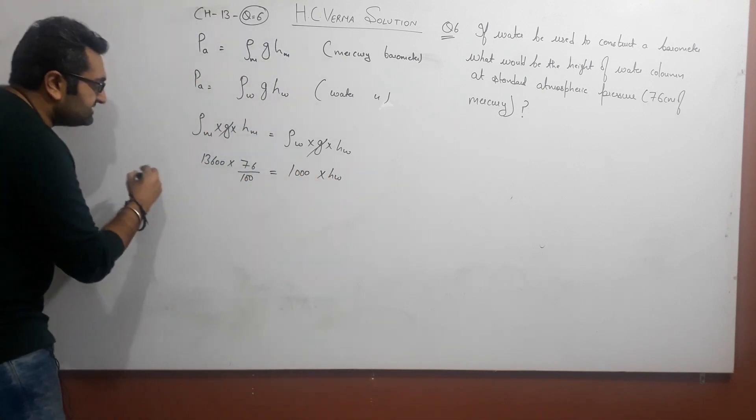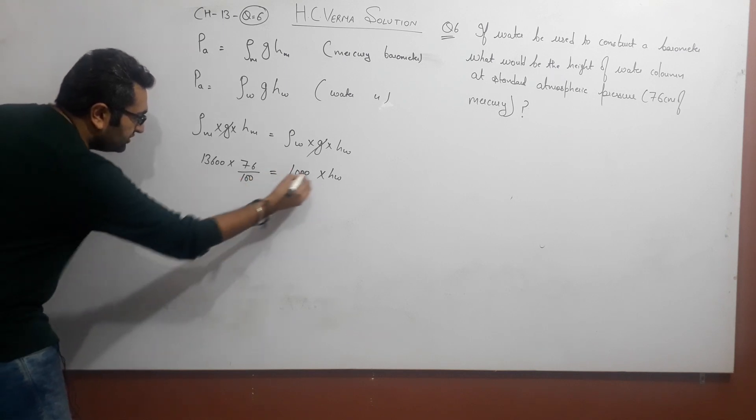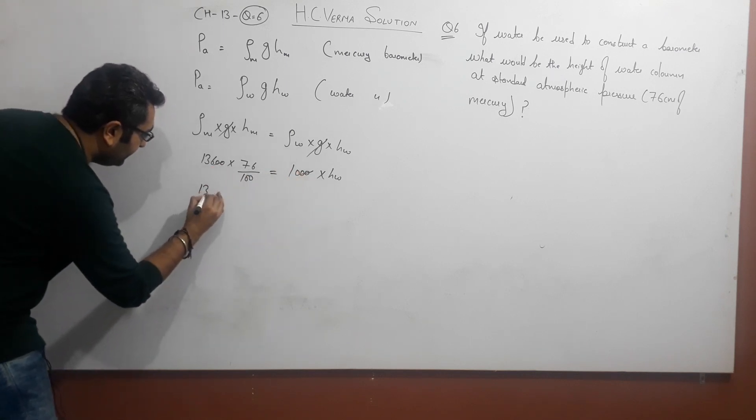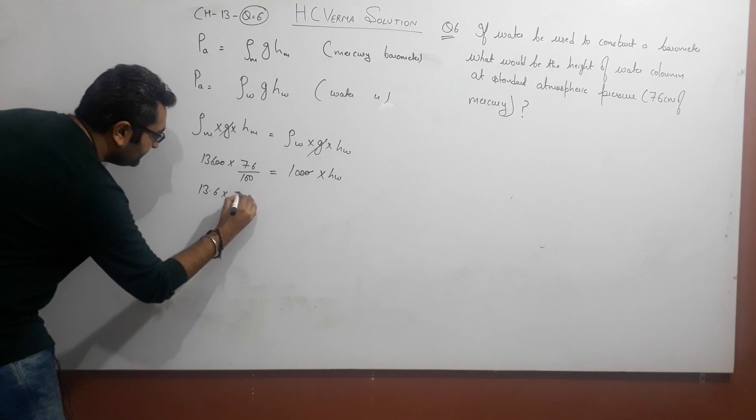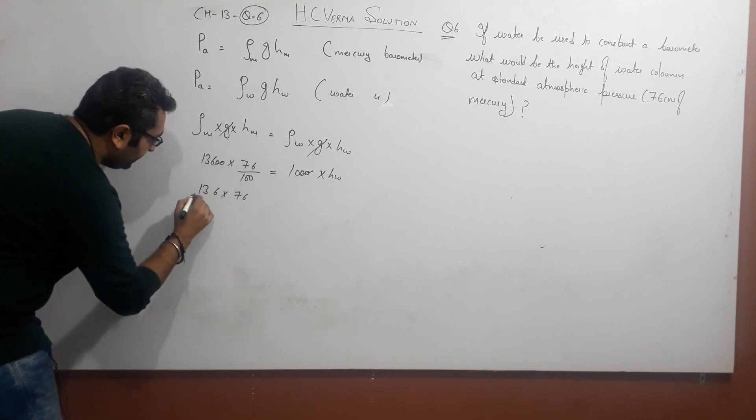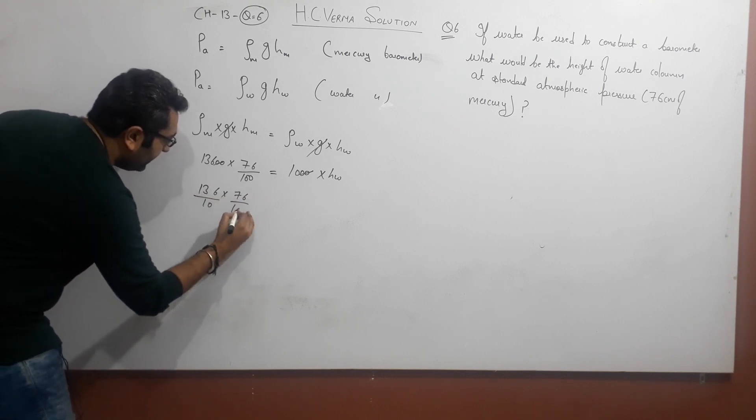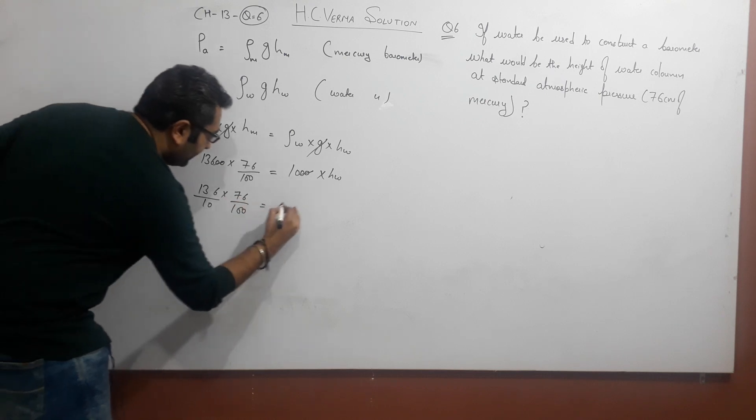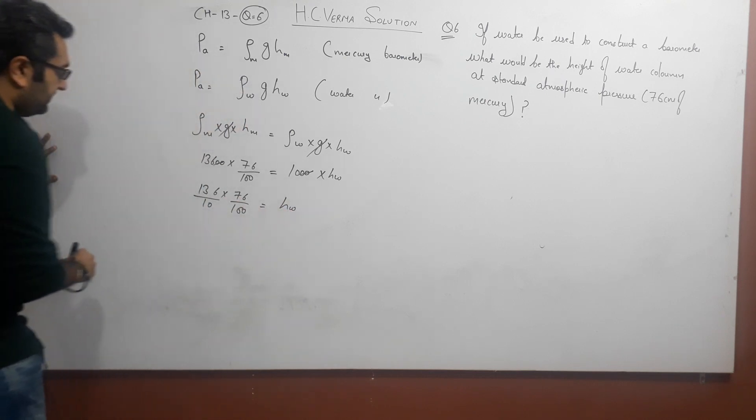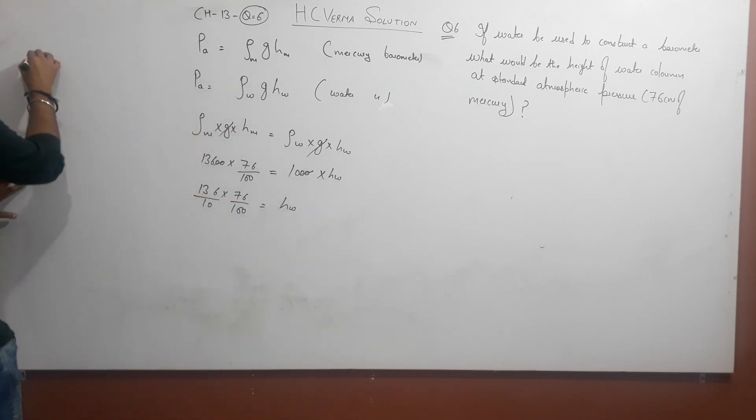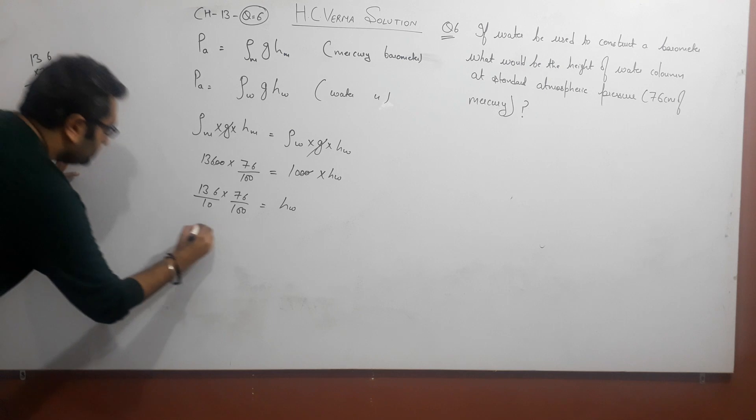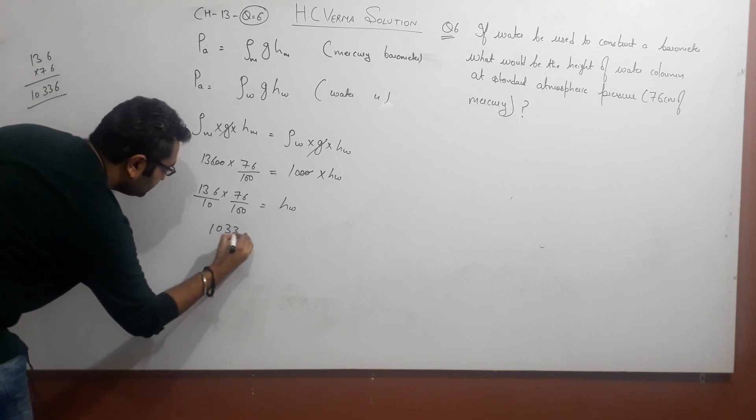Let's do that. If I rearrange, 13.6 multiply 76 divided by 100. That will be height of water. I get 10336, so 10336 divided...